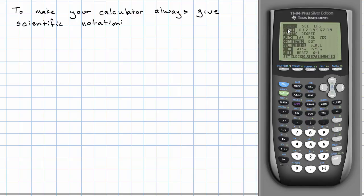There's a mode button. Now the mode button, the very first line gives you three options. Normal, SCI for scientific notation, and ENG for engineering notation. You're welcome to play around with engineering notation and see what that is. But we aren't going to be using that in this course.